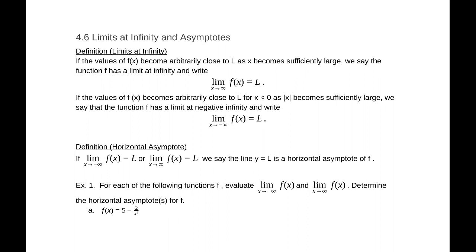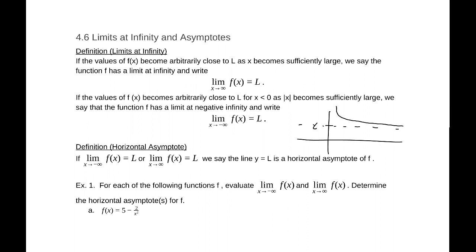Now if either of those two things is true, then we can write that y equals L is a horizontal asymptote of f. That is, as you go out in either direction — if the function at positive infinity is approaching L or the function at negative infinity is approaching L — then that is a horizontal asymptote.